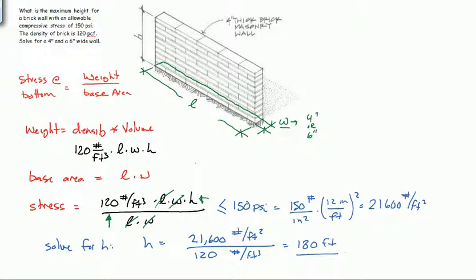So this tells me that the wall could be 180 feet tall before we exceed the compressive stress of 150 psi. And we have to ask ourselves, is this realistic? A 4 inch or a 6 inch wall 180 feet tall. There are considerations of stability here. I wouldn't want to go much more than maybe 10 feet, 20 feet with a wall this wide, unless it was fully braced. So the math tells us 180 feet. Common sense tells us that's a really big number and we would never go that far.